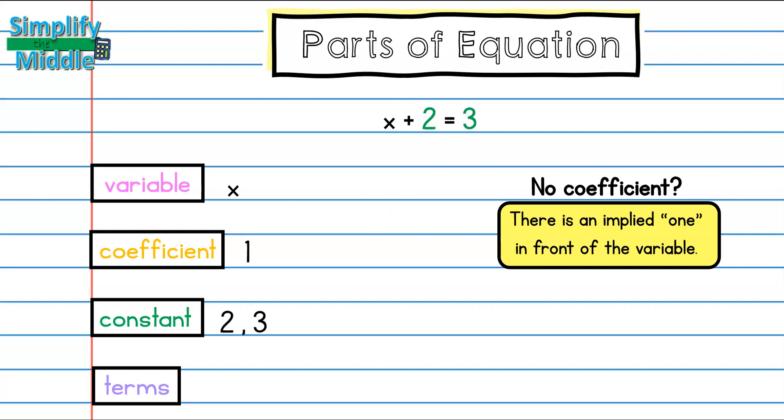Finally, I'll count my terms. Remember, a term can be a variable by itself, a number by itself called a constant, or a combination of a number with a variable. So here I have x, 2, and 3. So three terms.